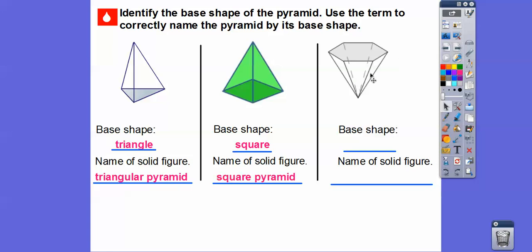This pyramid is upside down — that's all right. The base is on the top: one, two, three, four, five, six — six sides is a hexagon, so it's a hexagonal pyramid.